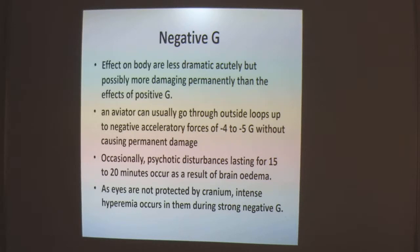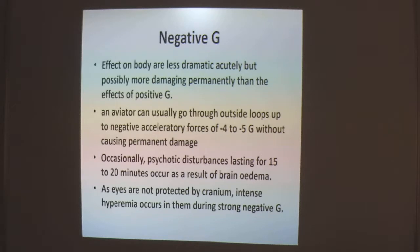Talking about negative gravity: the effects of negative gravity on the body are less dramatic acutely but more damaging permanently compared to positive gravity. An aviator can usually go through outside loops up to a negative acceleratory force of minus 4 to minus 5G without causing permanent damage. Occasionally, psychotic disturbances lasting 15 to 20 minutes occur as a result of brain edema. As the eyes are not protected by the cranium, intense hyperemia occurs in them due to strong negative G.